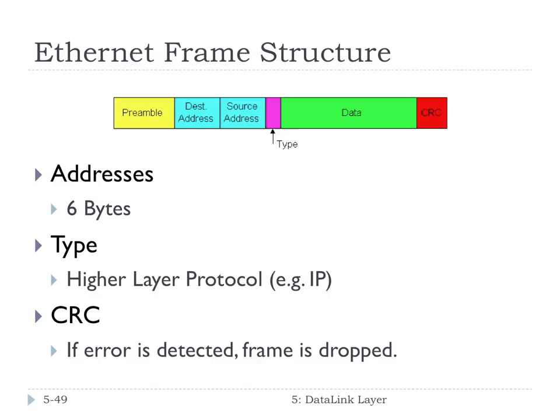The last part is the CRC bits — the cyclic redundancy check. We talked about modulo-2 arithmetic and dividing those really long numbers, the data bits, the generator, and the remainder R. Running that algorithm is what goes in the CRC. If an error is detected, the frame is dropped, so it would be up to a higher-level protocol to recover from those dropped packets.